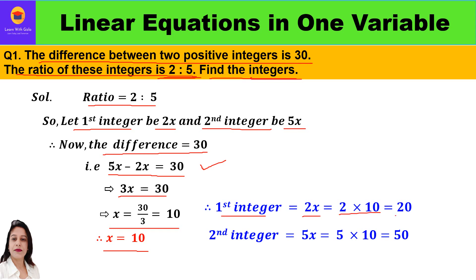The value of x is 10. So the first integer, 2x, is 2 into 10 which is 20, and the second integer, 5x, is 5 into 10 which is 50. The two positive integers are 20 and 50. You can check: 50 minus 20 gives a difference of 30, and the ratio is also 2 is to 5. Now let us take up the second question.